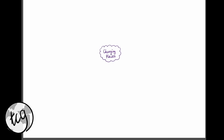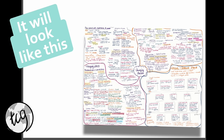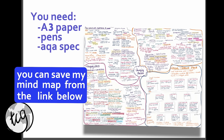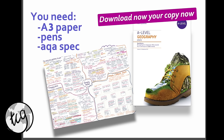Hi everyone, so in this video we are going to make a revision mind map on the topic Changing Places for AQA A-level Geography. Hopefully you'll find it really useful. Our aim is to put all the information onto one sheet of paper so we're really going to condense the key information. If you have an A3 piece of paper to write along as we go, that'd be fantastic. It's really useful to have the specification in front of you when revising so you can check off everything you've done.